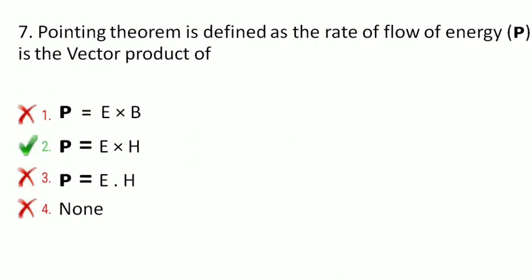Next is: Poynting theorem is defined as the rate of flow of energy P is the vector product of — P equals E cross B, P equals curl of E and H, P equals dot product of E and H, or none? The correct option is P equals the cross (vector) product of E and H, where E is the electric field and H is the magnetic field.